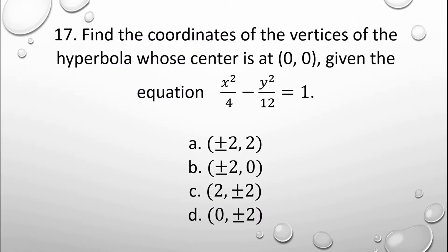Next, number 17: find the coordinates of the vertices of the hyperbola whose center is at 0, 0, given the equation x squared over 4 minus y squared over 12 is equal to 1. The choices are: a) positive-negative 2, 2; b) positive-negative 2, 0; c) 2, positive-negative 2; and d) 0, positive-negative 2.